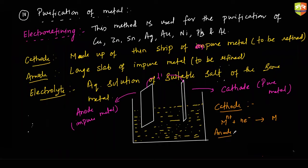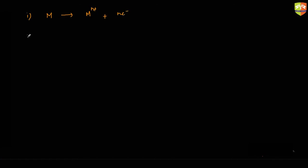At the anode, two reactions take place. The first reaction is the oxidation of metal M: M → M^(n+) + n electrons. The second reaction involves the impurities: X^(n-) → ½X₂ + n electrons. We don't want the second reaction to take place — it is the unwanted reaction. The first one is the wanted reaction, as we need to get the metal.